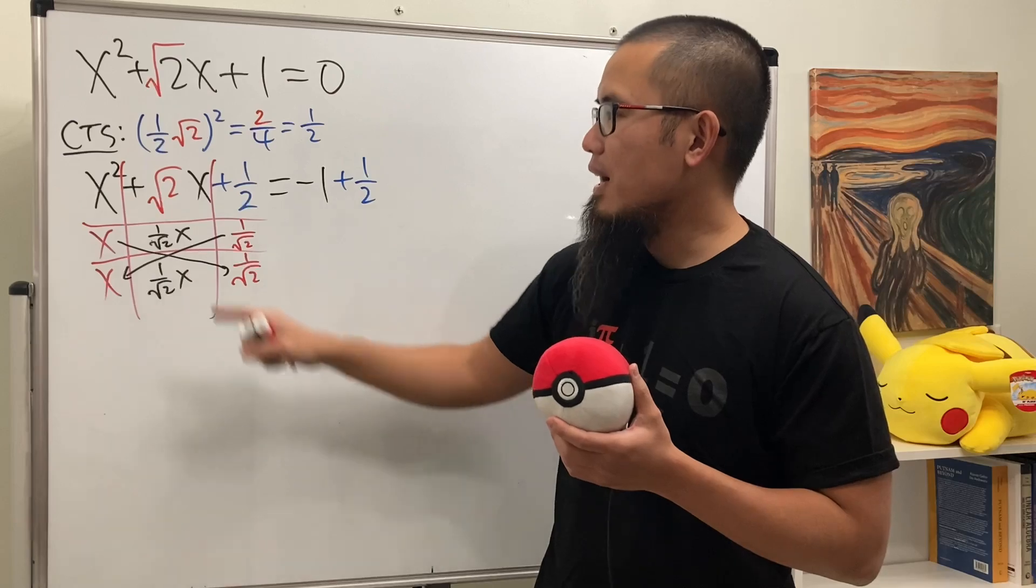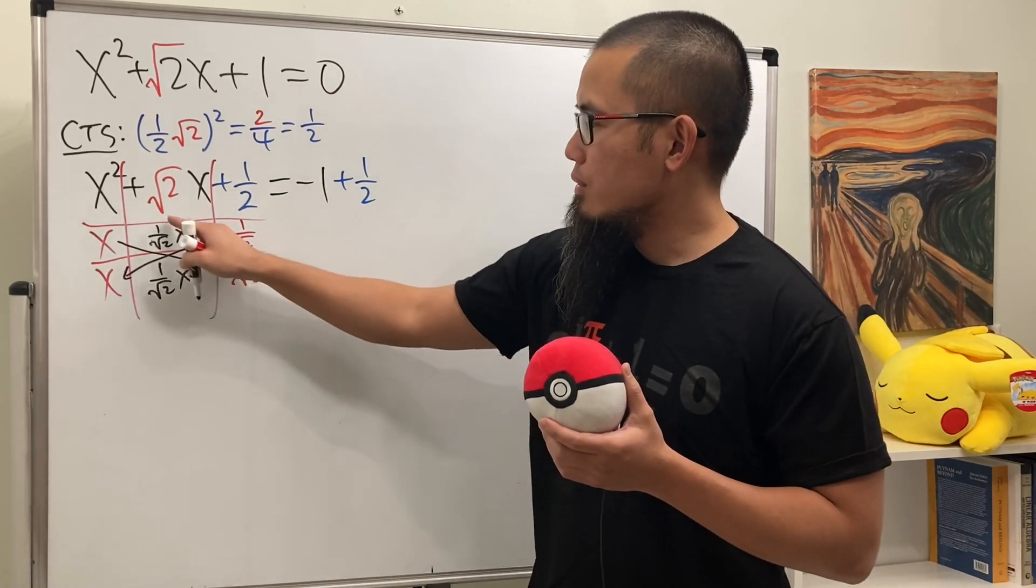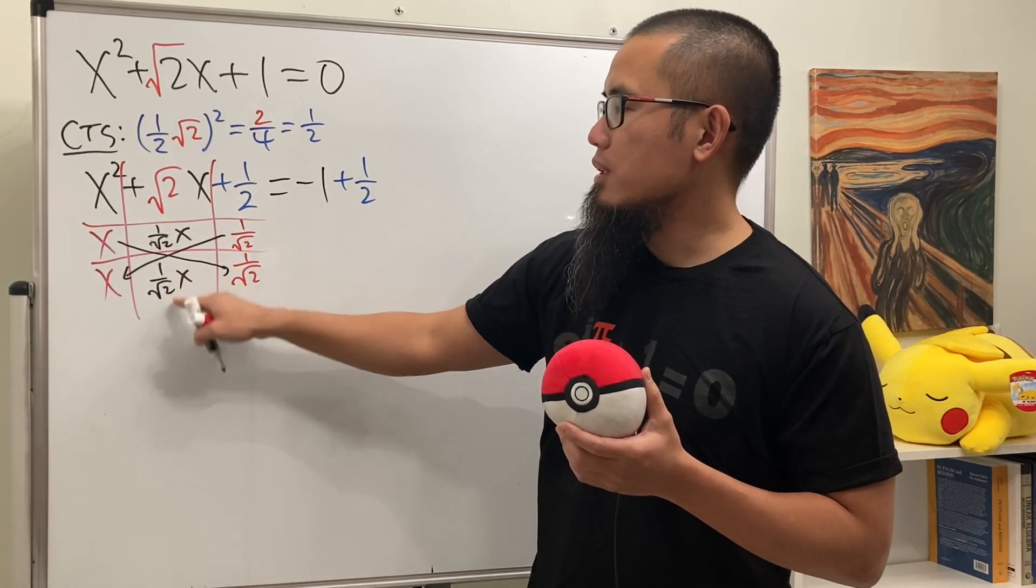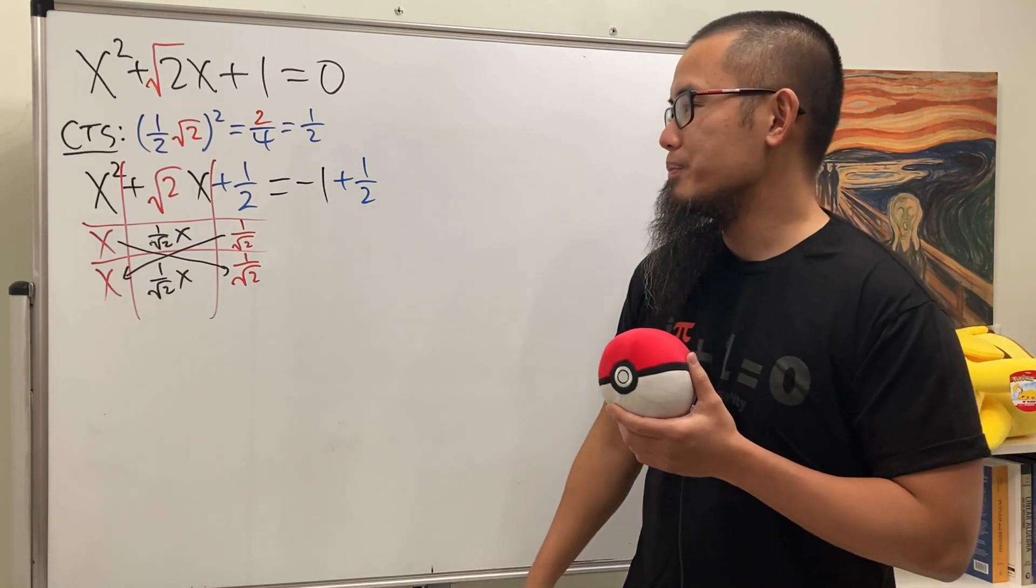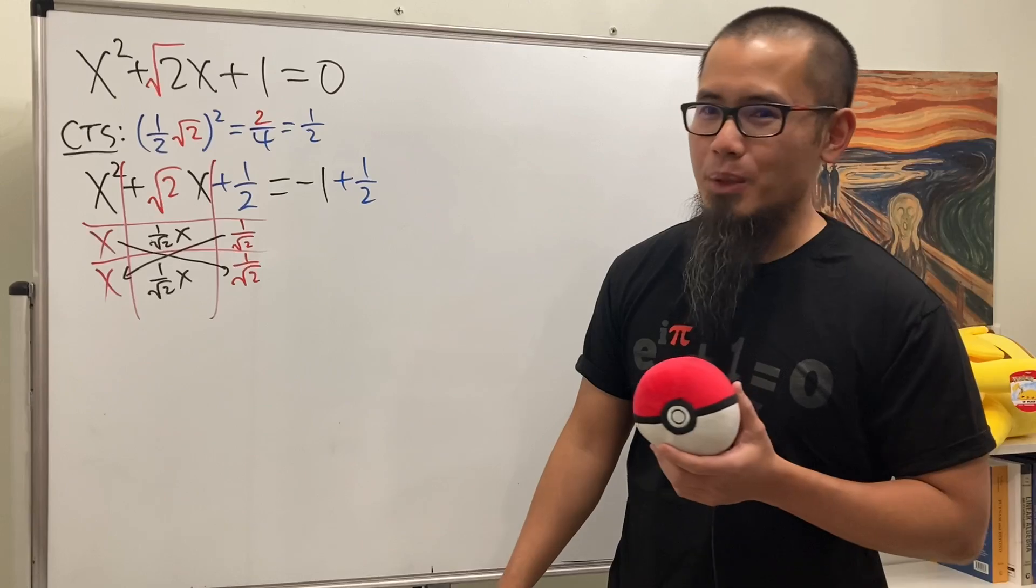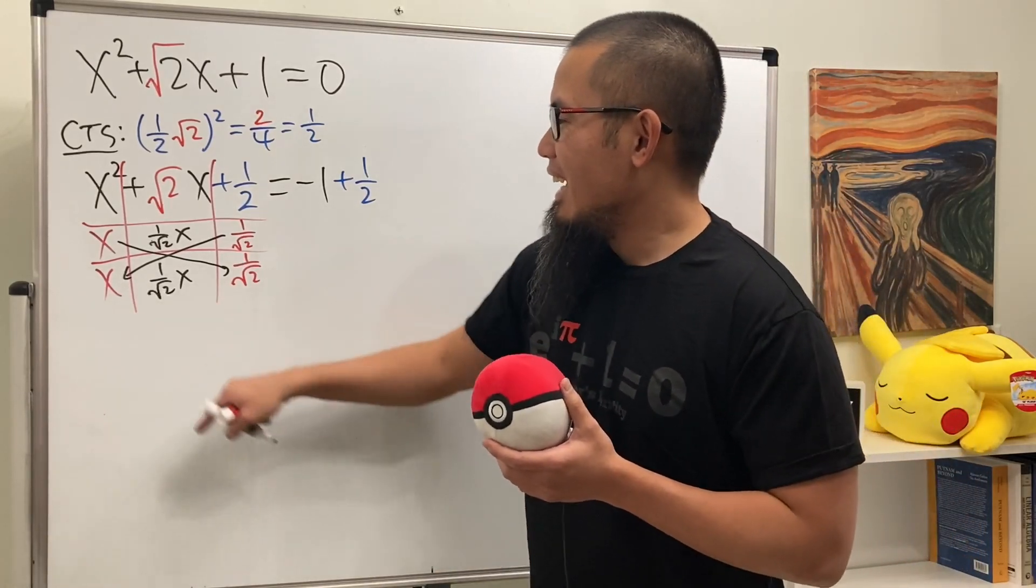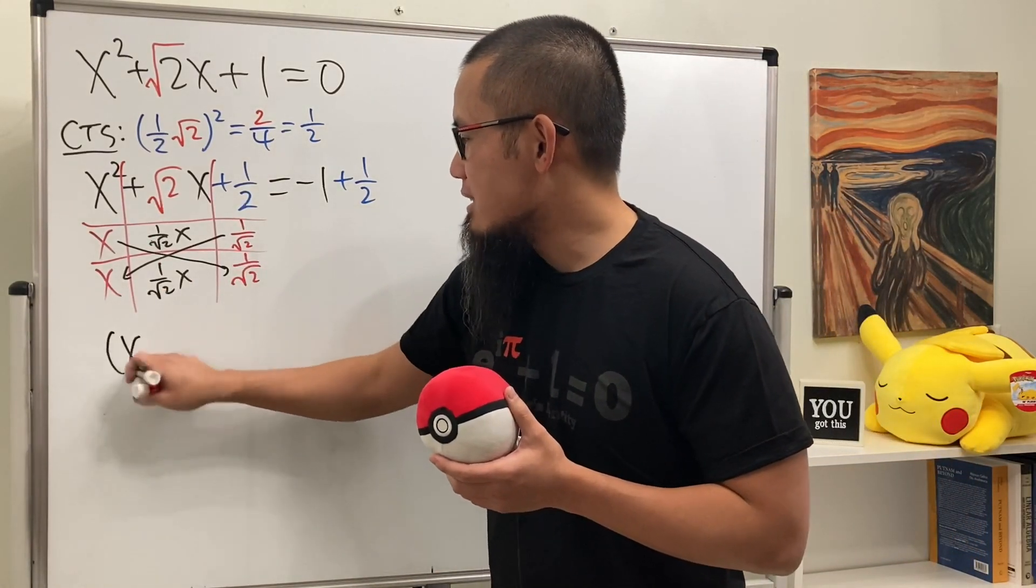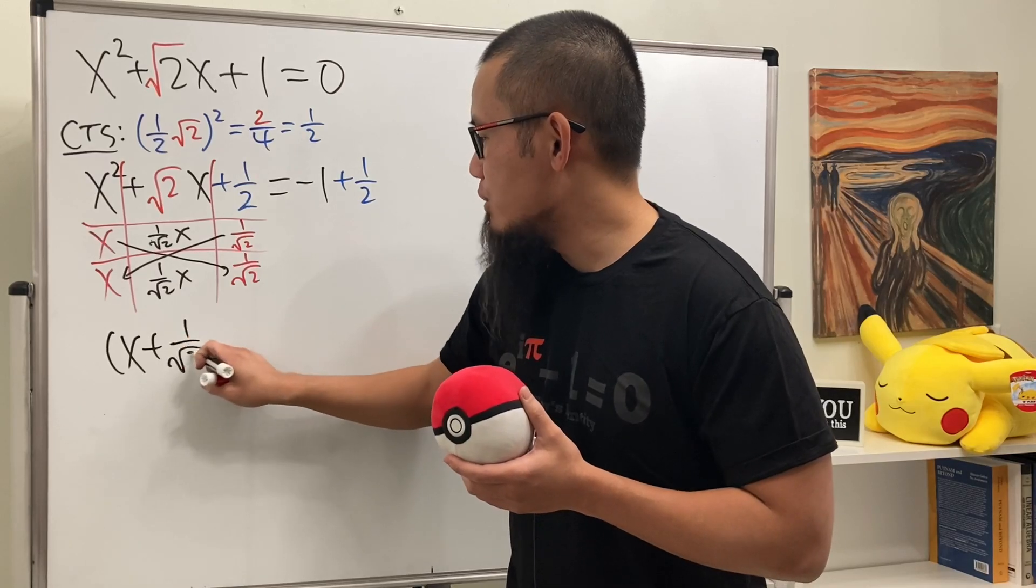And this times that is 1 over square root of 2x. Together, you get 2 over square root of 2. And that's, in fact, square root of 2. Right? 2 over square root of 2 is actually the same as square root of 2. You can rationalize the denominator. Or maybe you can just take my word for it. Anyway,